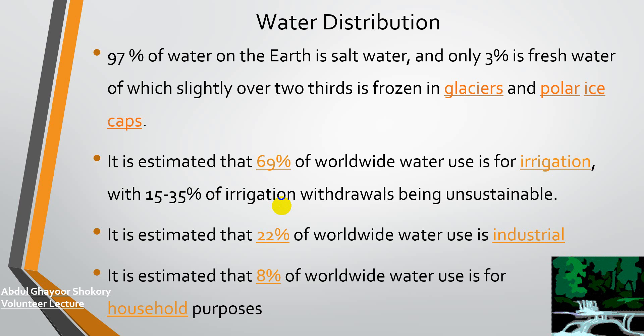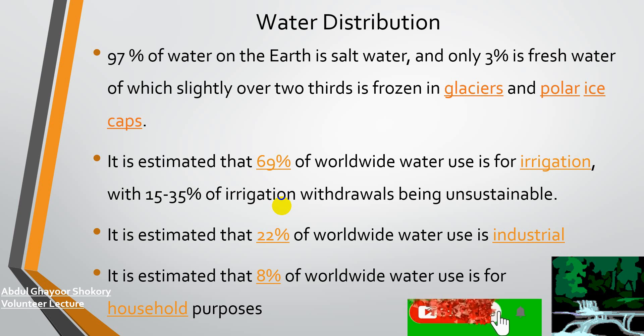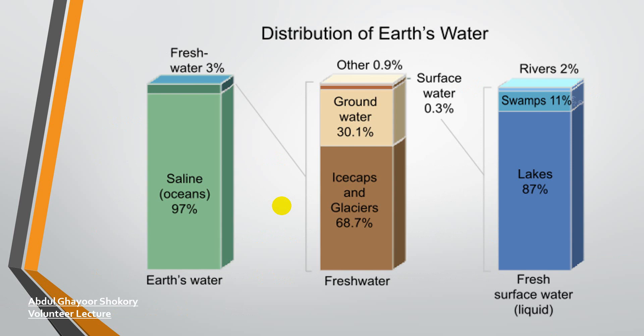Regarding water distribution in the world: 97 percent of water on the earth is salt water, and only three percent is fresh water. About two-thirds of that fresh water is frozen in glaciers and ice caps. It is estimated that 69 percent of worldwide water is used for irrigation, and 15 to 35 percent of that 69 percent is used for withdrawal irrigation. Additionally, 22 percent of worldwide water is used for industrial purposes, and another percentage is used for household purposes.